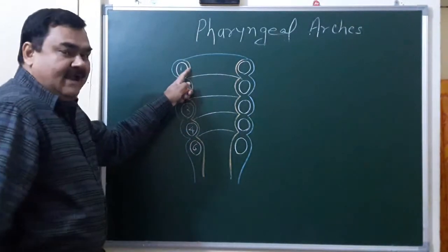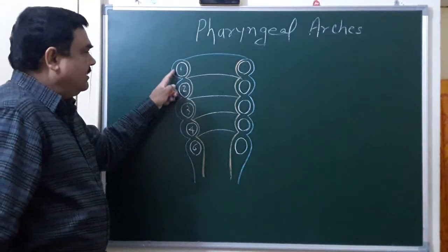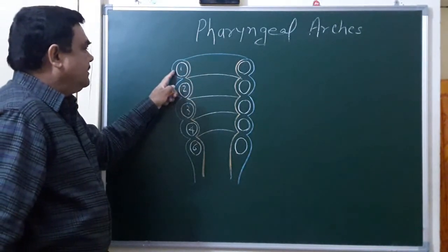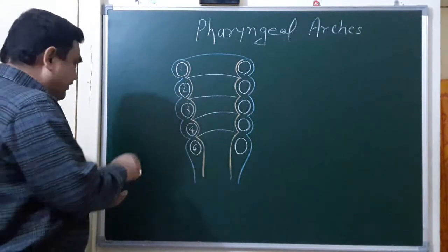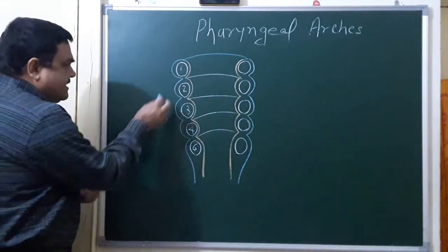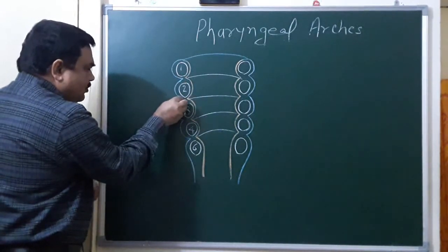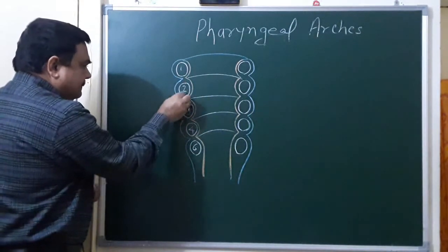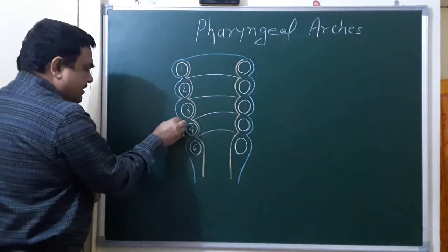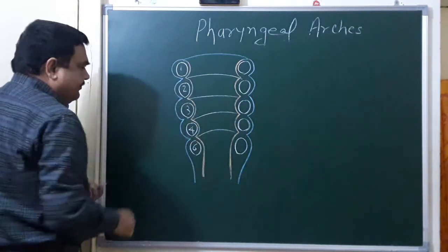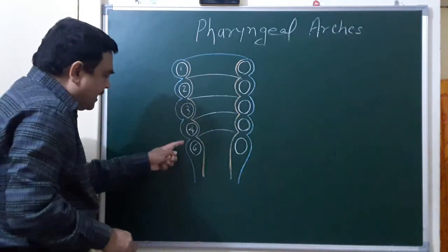Internally lined by endoderm. Externally, outside, this is ectodermal lining. Here you can see a series of grooves. This is groove, this is groove, this is groove with two adjacent arches. Groups are present.